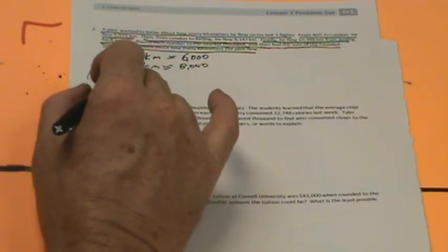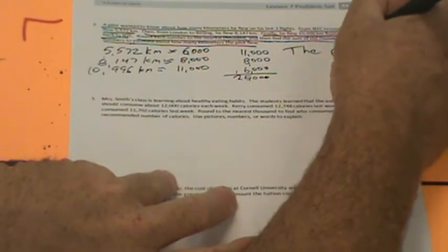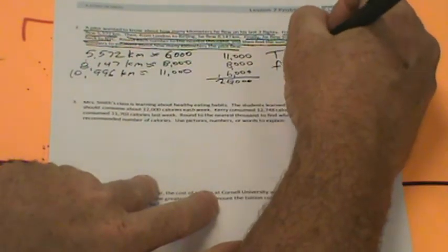Finally, it's time to add. I'm going to do 11,000 plus 8,000 plus 6,000. 1 plus 8 is 9, plus 6 is 15. Bring over the 1. 1 plus 1 is 2. Now it's time to write: the pilot flew about—when we talk about rounding, it's about, not exact—about 25,000 kilometers.